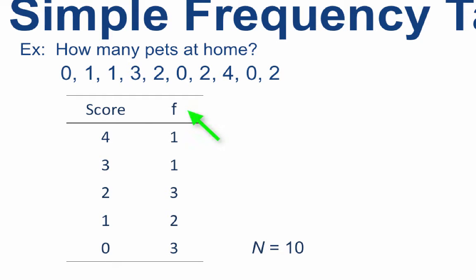We will create the F column using the frequency scores. So how many people had four pets at home, according to our survey? Only one. How many people had three pets? Also one. Now by the way, when working by hand, you will find it beneficial to cross out the numbers as you count them.